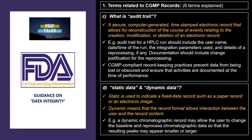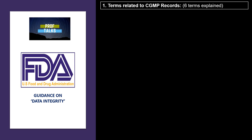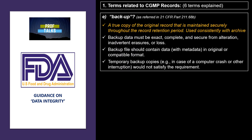The next terms defined are static data and dynamic data. Static data is data which is fixed and does not have any interaction with the user, like a paper record. Dynamic data is a record which allows interaction between the user and the record. An example of dynamic data is a chromatographic record, which allows the user to change the baseline and reprocess the chromatograms.